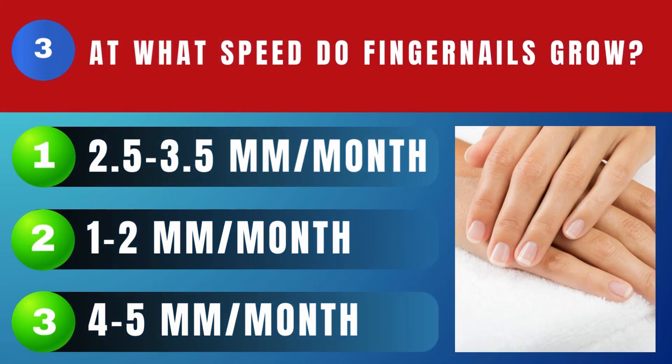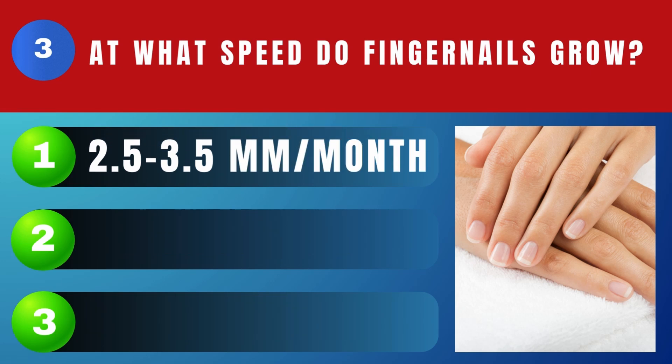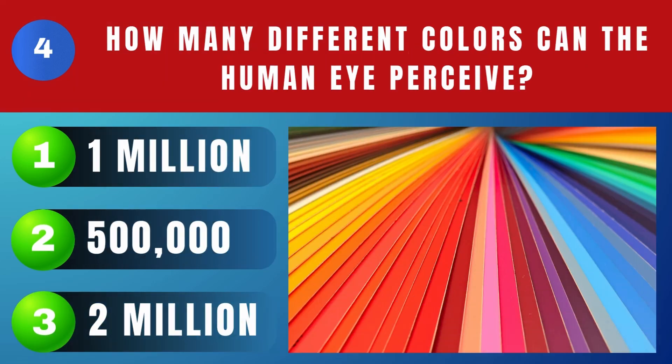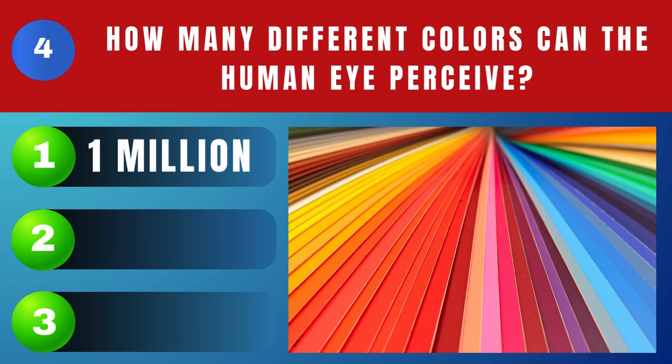At what speed do fingernails grow? 2.5 to 3.5 millimeters per month. How many different colors can the human eye perceive? 1,000,000.